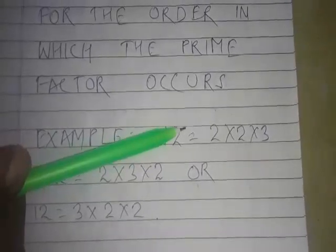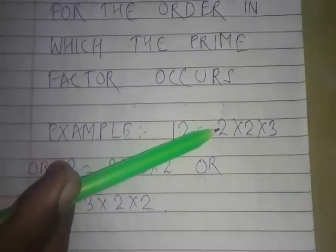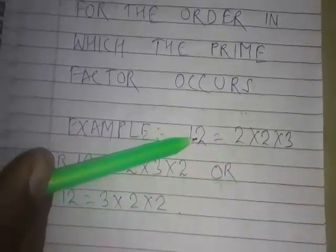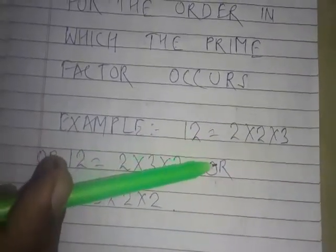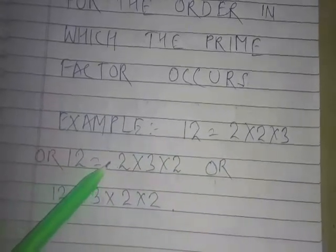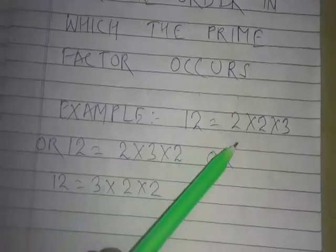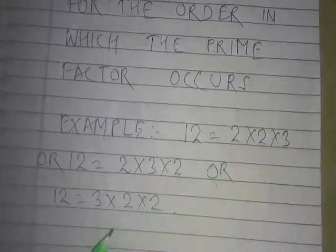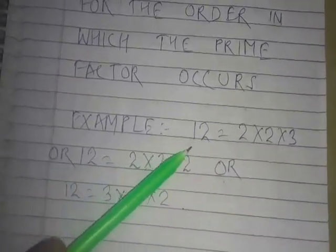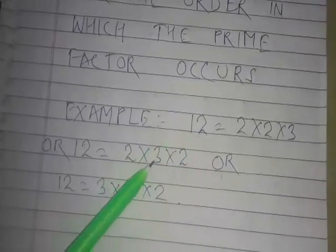The prime factors of 12 are 2 and 3. Its prime factorization is 2 × 2 × 3. The same 12 can be expressed in another way: 12 = 2 × 3 × 2. Here the order has been changed — in the first, two 2s come first, then one 3 — but the result remains the same number 12. So it is called unique prime factorization: every composite number has its own unique prime factorization.